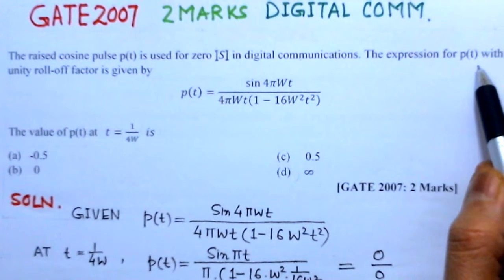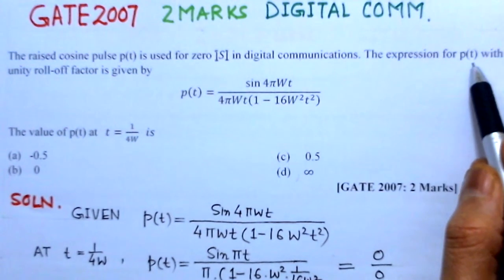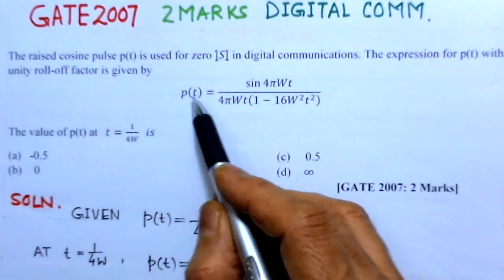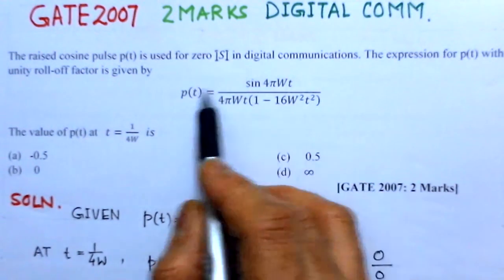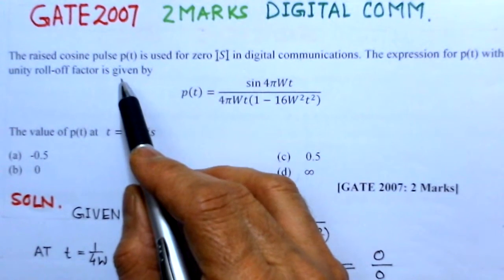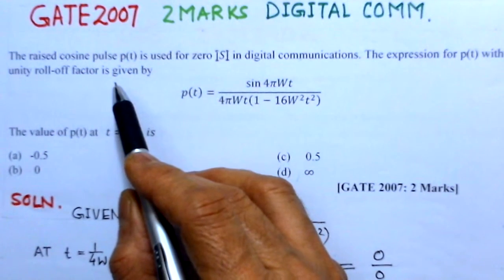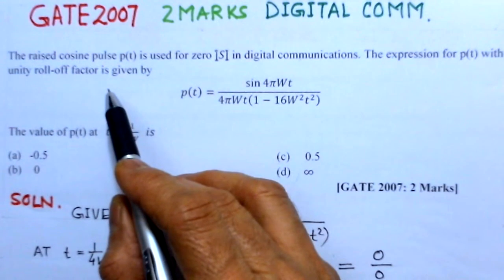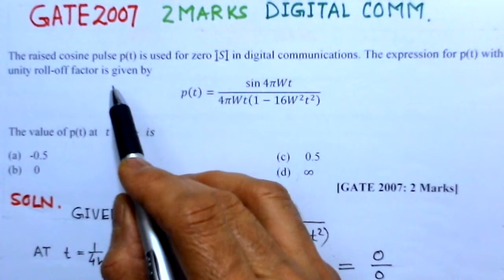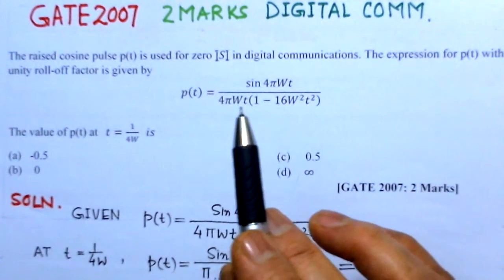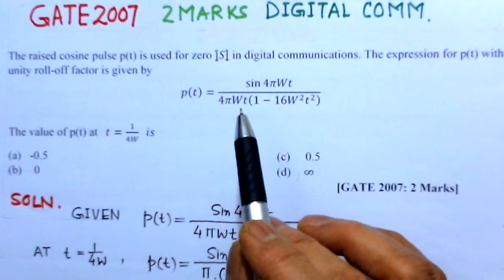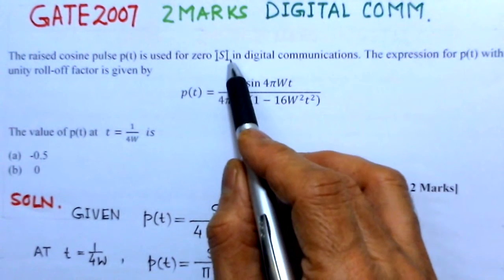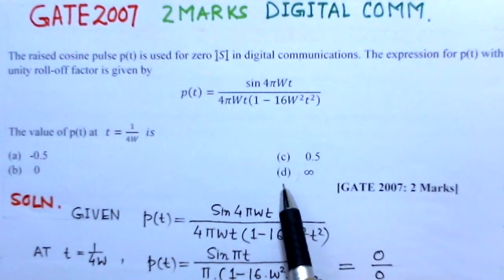And raised cosine pulse means there is a special type of pulse whose cosine part is raised by its peak. That means cosine part is represented by the peak part and that is raised to get the minimum inter-symbol interference.